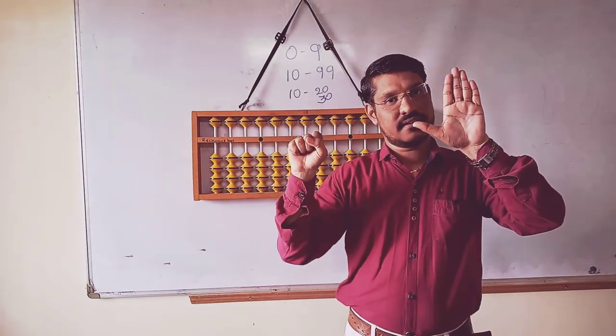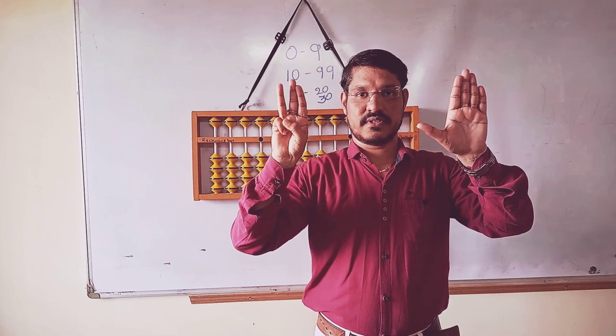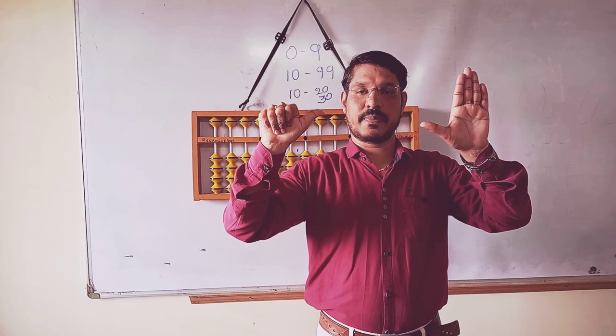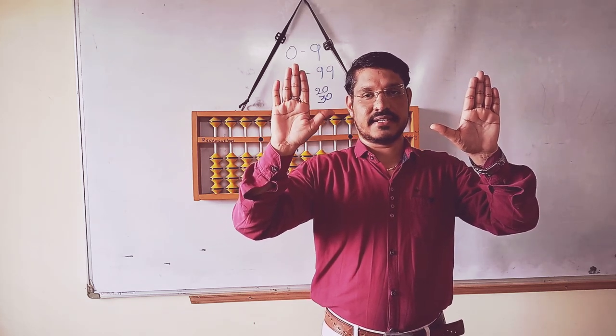So how to do 91, 92? It's 9, 91, 92, 93, 94, and 95, 96, 97, 98, 99.